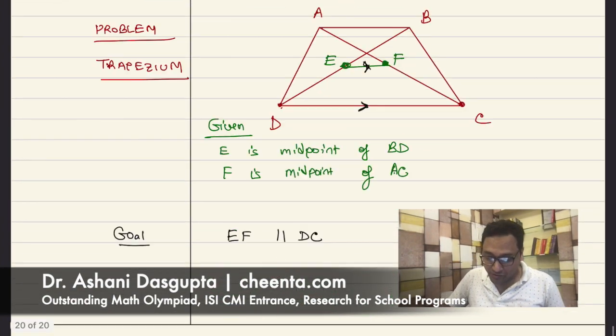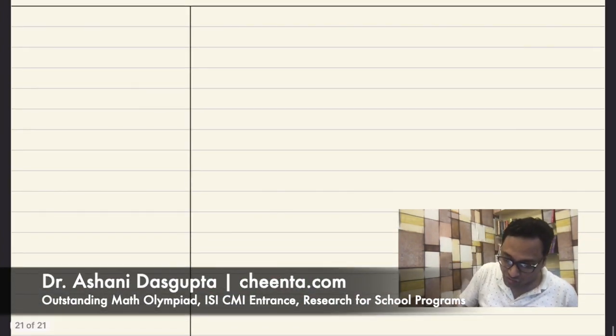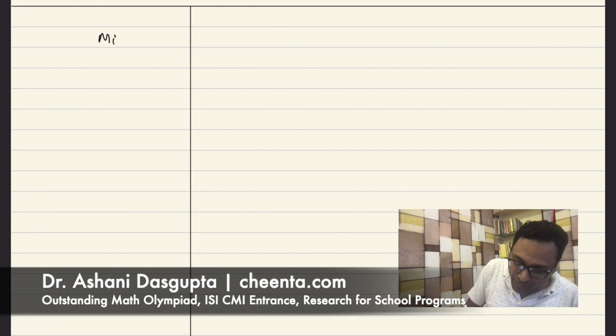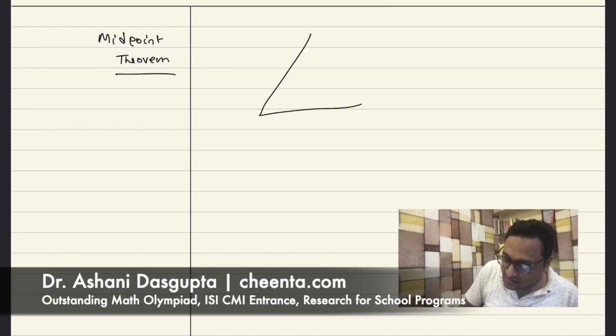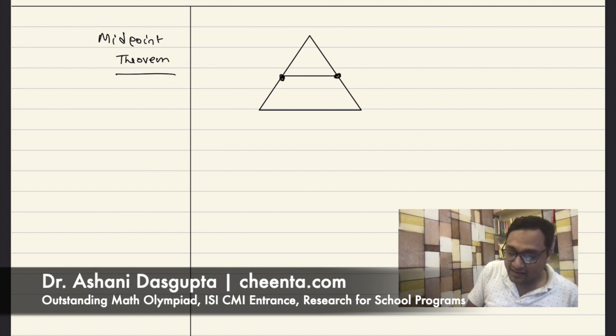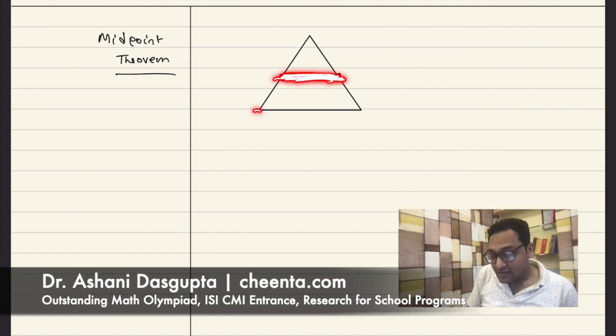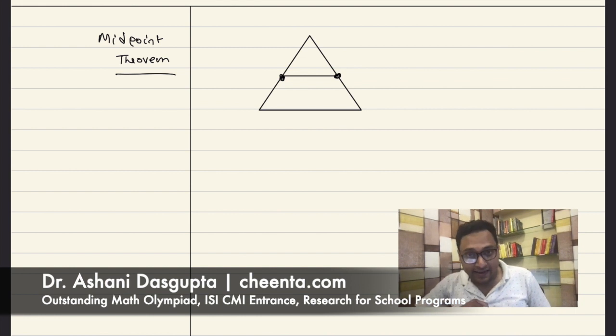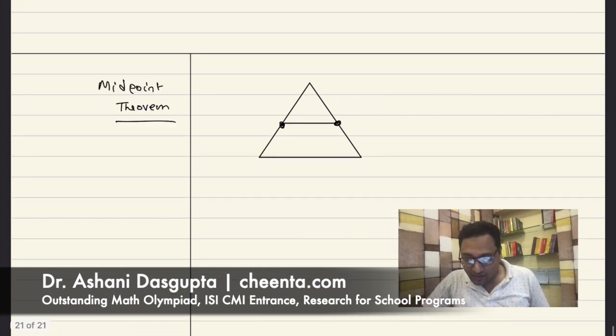If you don't know what the midpoint theorem is, let me go to a new page and show it to you. Midpoint theorem. It's that if you have a triangle, if it connects the midpoint of two sides, then this segment is parallel to the third side. That's a very standard tool of showing two lines are parallel in a particular triangle.